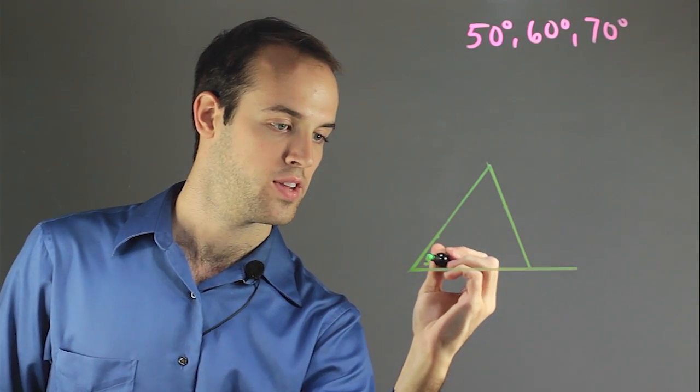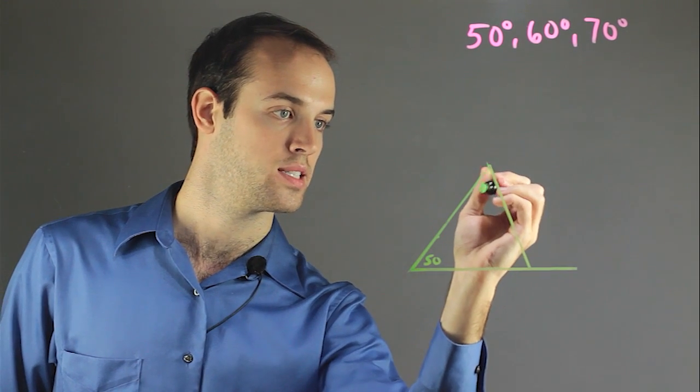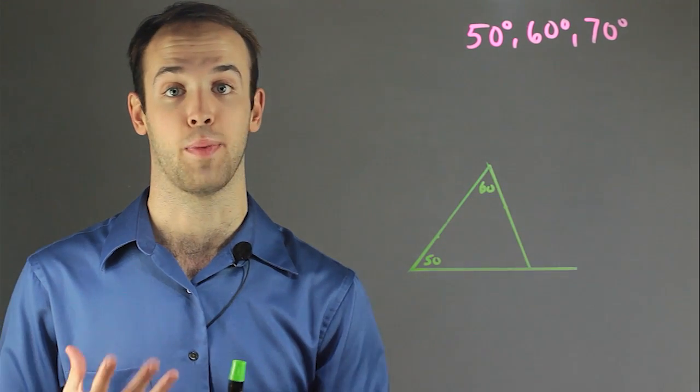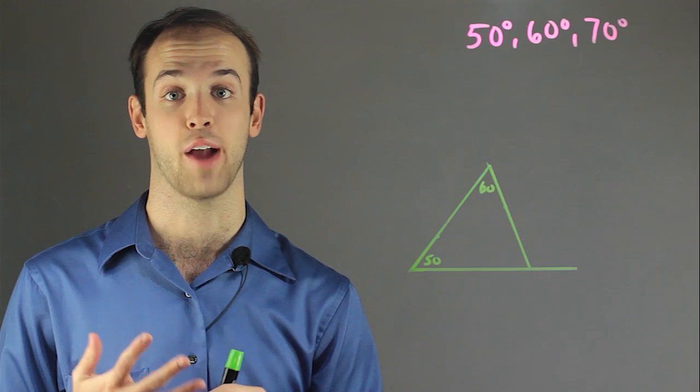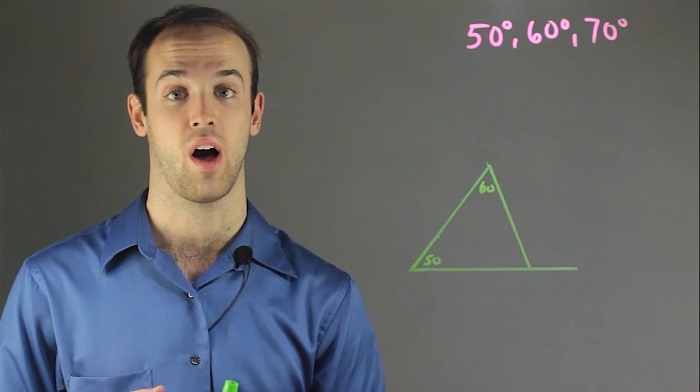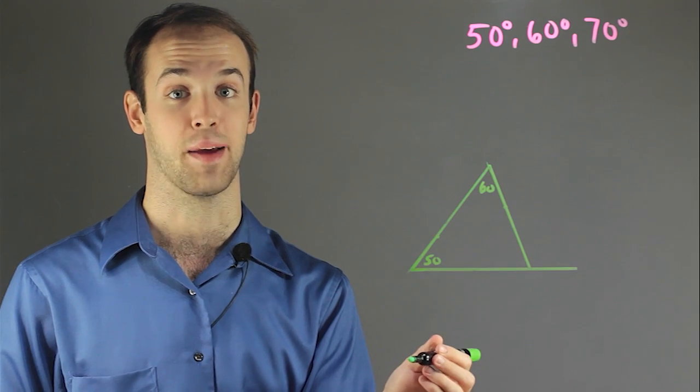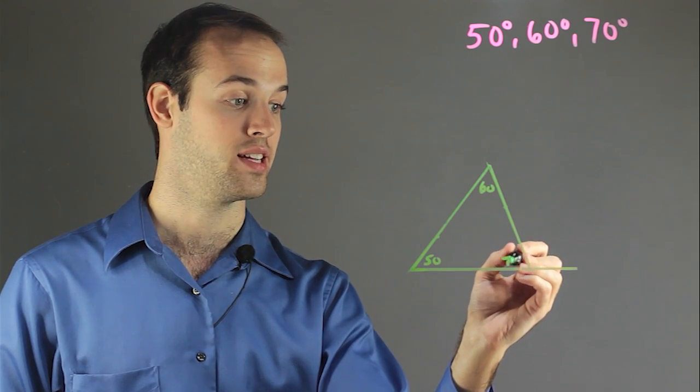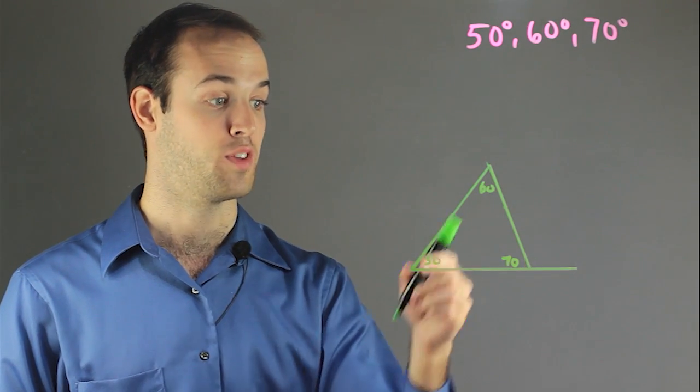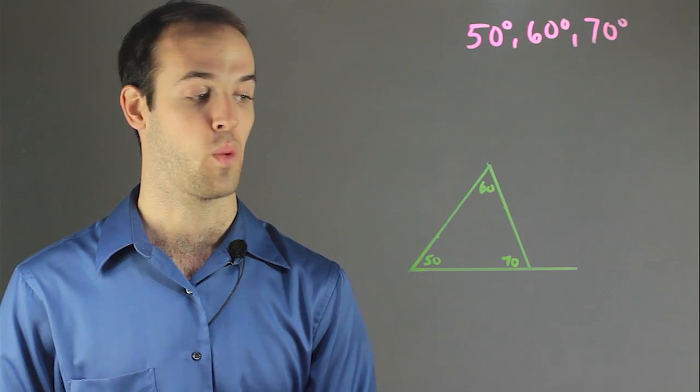So this angle right here was 50. This one was 60. And the best part about a triangle is that no matter what, they're always going to equal 180 degrees. So I don't even have to measure this angle. I know for a fact that it must be 70 degrees. Because 50 plus 60 plus 70 is equal to 180.